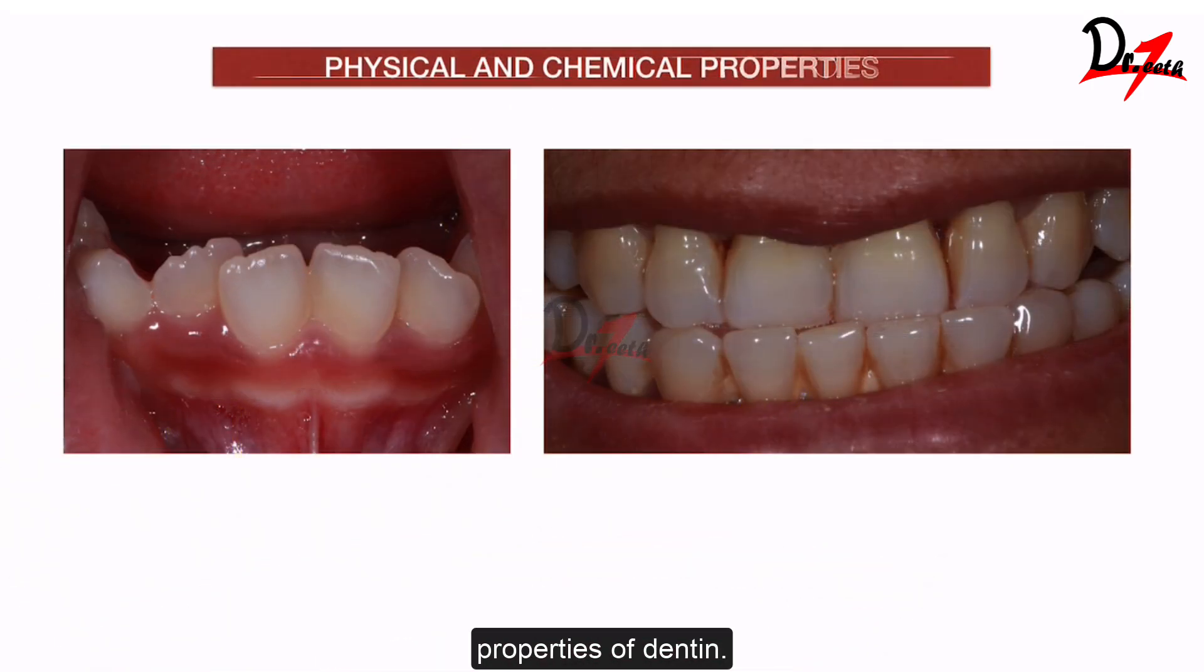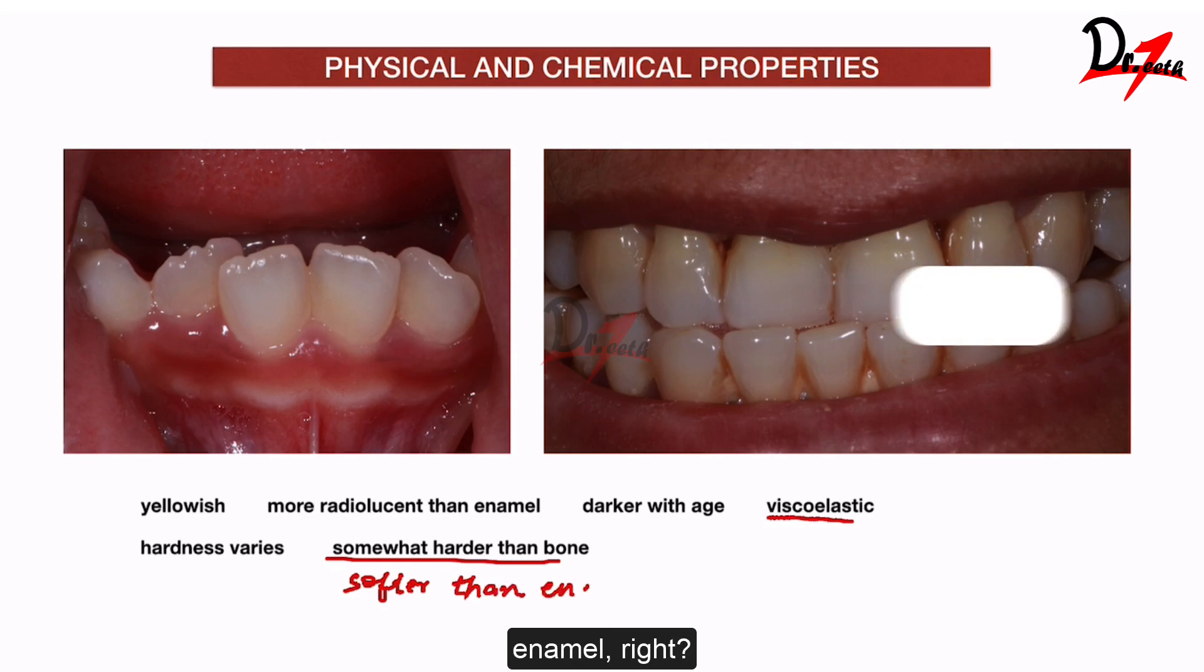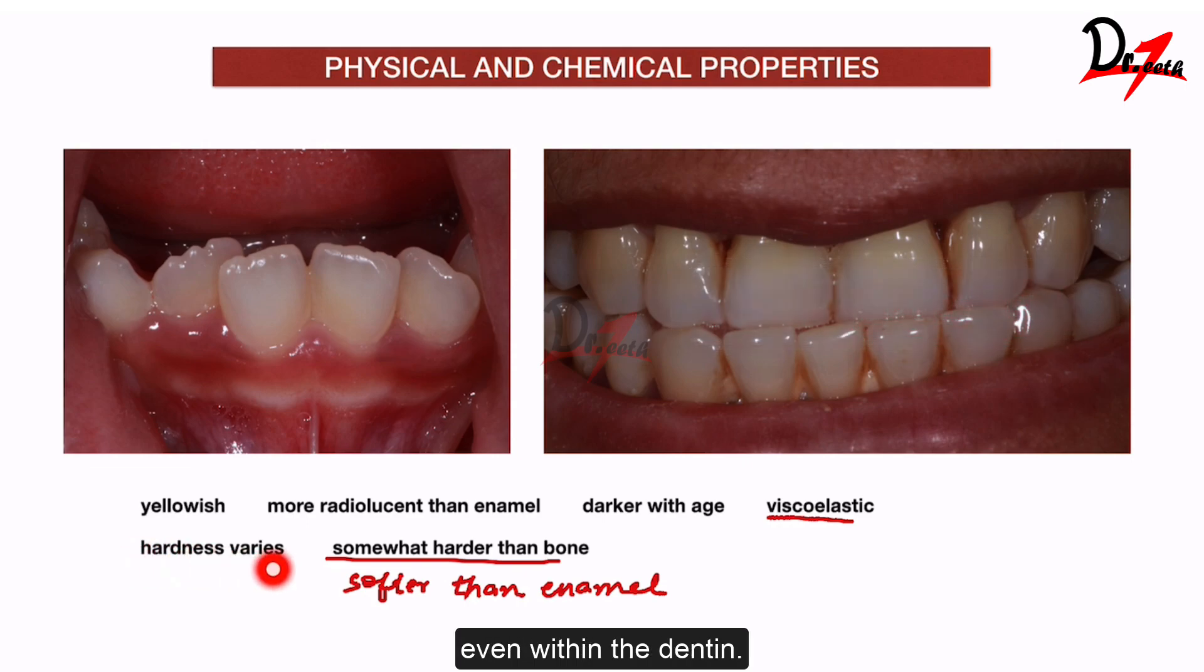Let's come to the physical and the chemical properties of dentine. If you compare a young child's teeth with an old age teeth, you will find that the color has become slightly more yellow. Dentine is slightly yellowish but the yellowish color deepens with age. Dentine is viscoelastic unlike the enamel which was hard and brittle. It is somewhat harder than bone but it is softer than enamel.